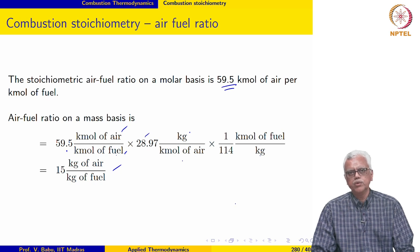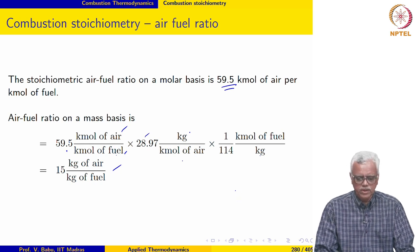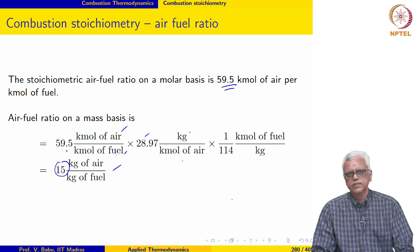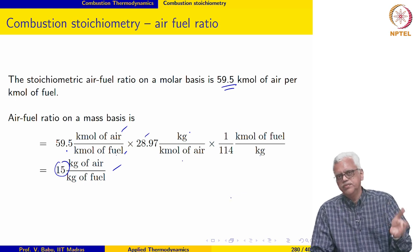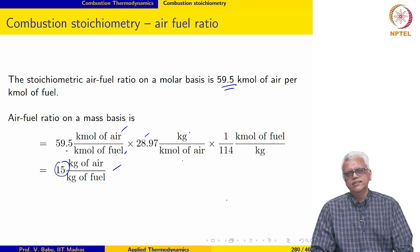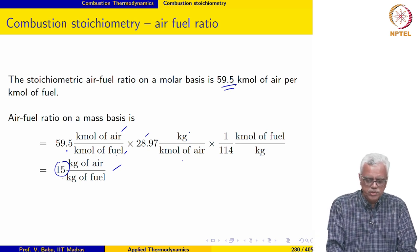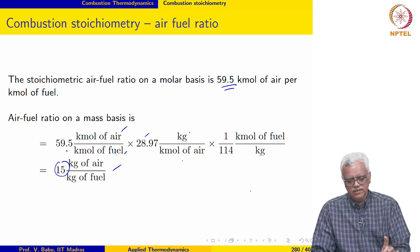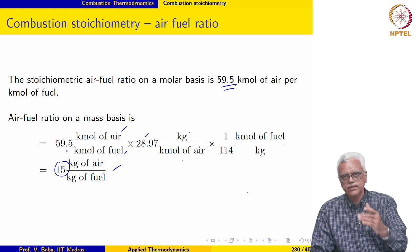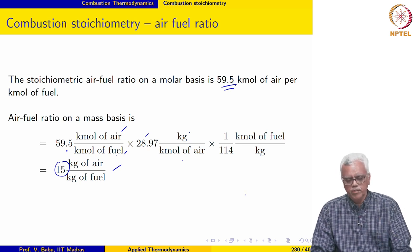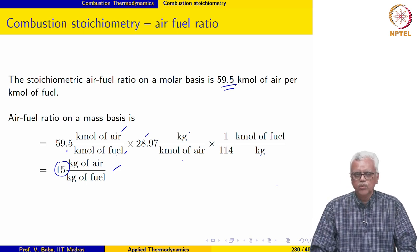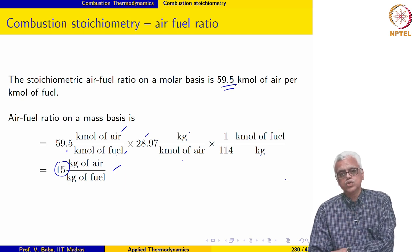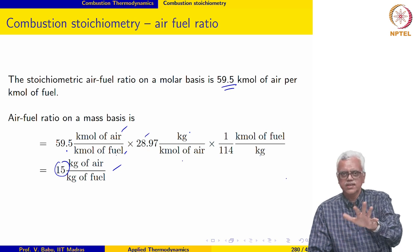It is somewhat striking that the stoichiometric air-fuel ratio on a mass basis for almost all hydrocarbon fuels is very close to 15 — from light fuels like methane to heavy fuels like diesel or kerosene. That number is worth remembering: the stoichiometric air-fuel ratio on a mass basis for hydrocarbon fuels is around 15.